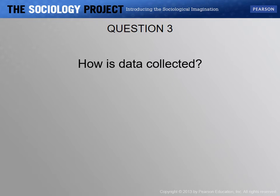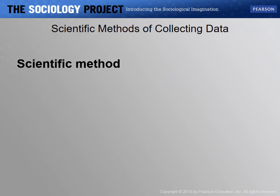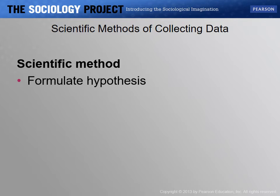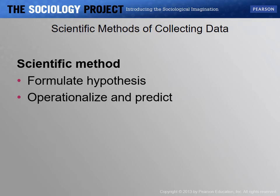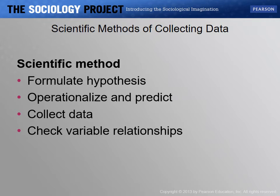How is data collected? The short answer is using the scientific method — a tradition going back several hundred years in which data is collected according to a plan to minimize problems. This includes formulating hypotheses and making predictions, operationalizing the variables you'll use. Some social variables like love, trust, and integrity are very difficult to operationalize. It also involves collecting data using social research techniques and checking for variable relationships using correlation coefficients, which don't show causality but can reveal trends in data.